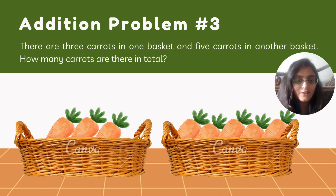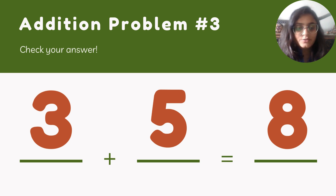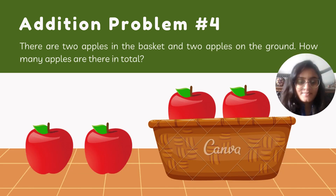So the total carrots in two baskets are one, two, three, four, five, six, seven, eight. There are eight carrots in two baskets. So three carrots plus five carrots equals eight carrots.